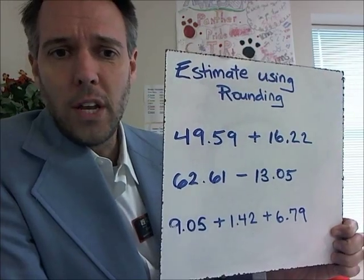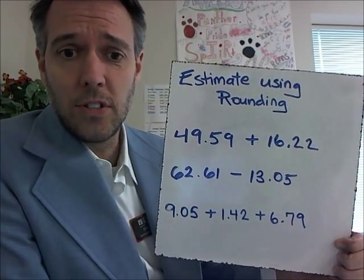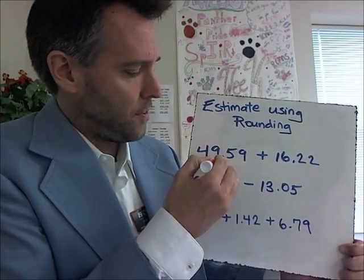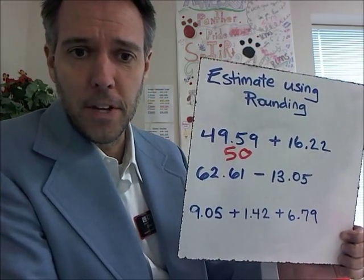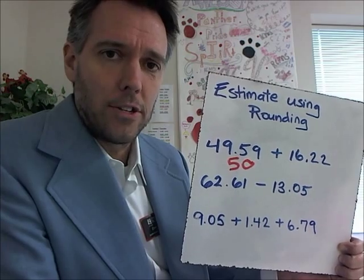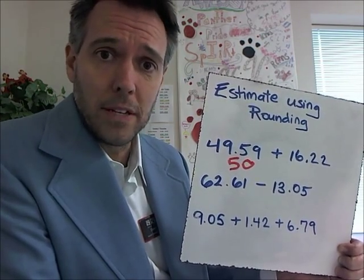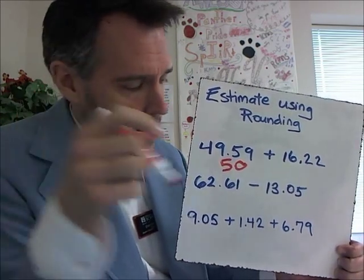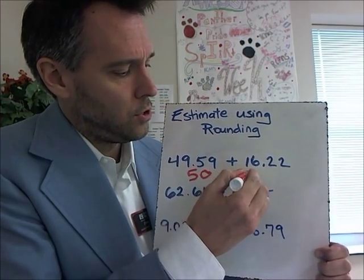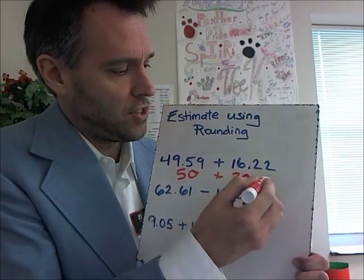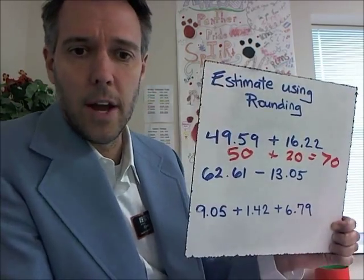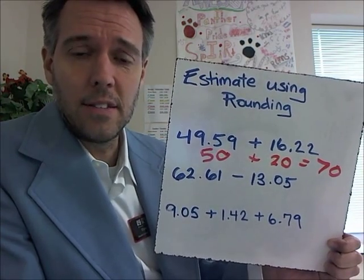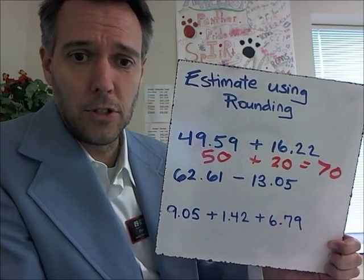So you see a problem like this first one: 49 and 59 hundredths plus 16 and 22 hundredths. Well, we can round 49 and 59 hundredths up to 50, so we're just going to put a little 50 up right here. 16 and 22 hundredths — what do you think you can round that to? You can round it down to 16, get rid of the decimal, just make it 16. But you can also round it to 20, something a little bit easier to use. You want to do something where you can use mental math. So let's make this 50 plus 20 — that's 70. Nice and easy, right?